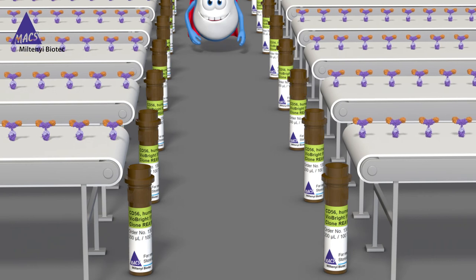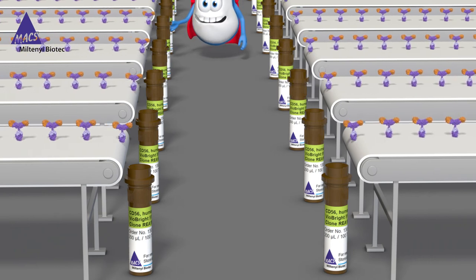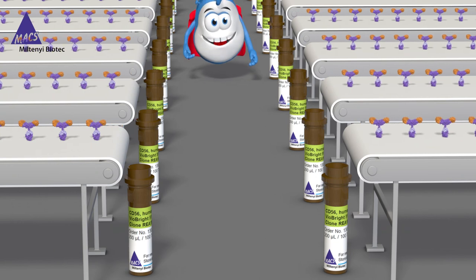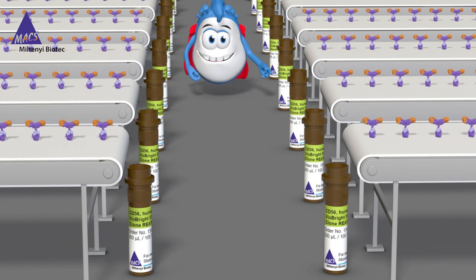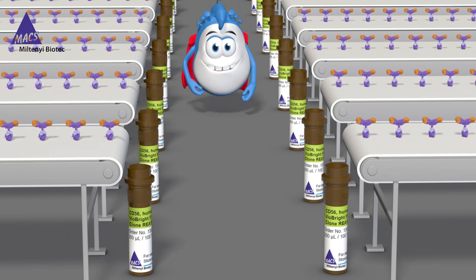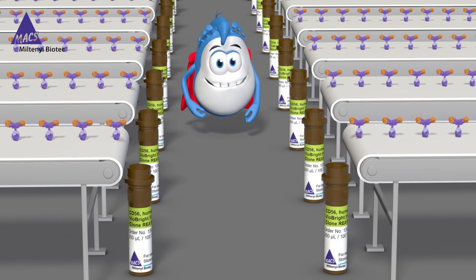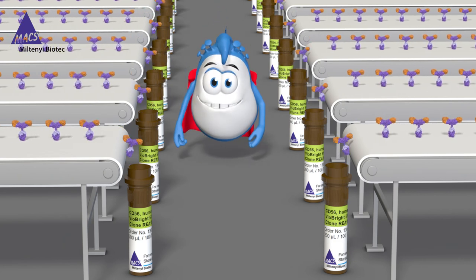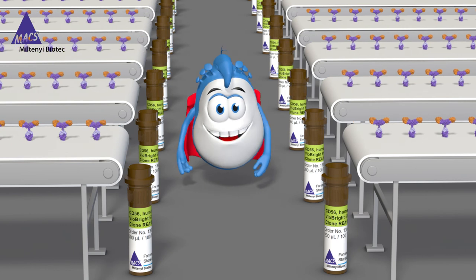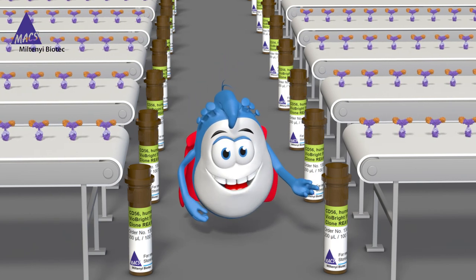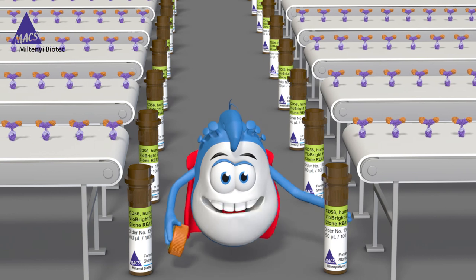You know, the best thing is that with reaffinity recombinant antibodies, your flow cytometry results come out in the same quality over and over again. Because we are in control of the sequence, we know exactly which final products we can expect. That's what I call truly reproducible antibodies.